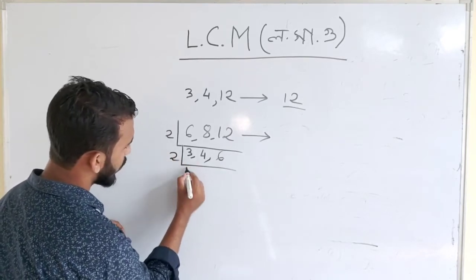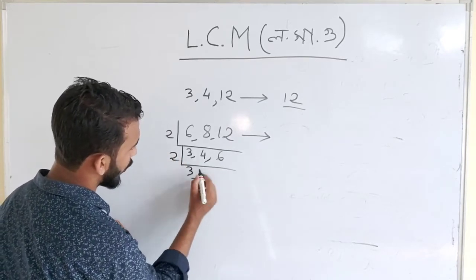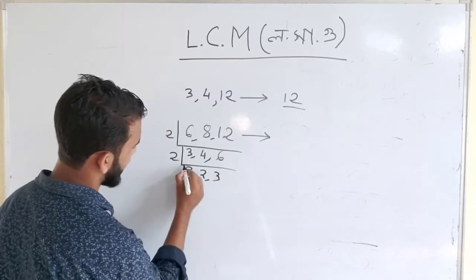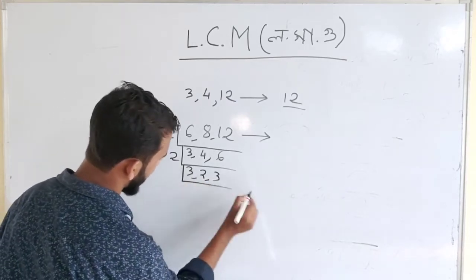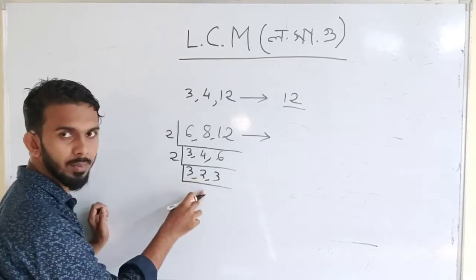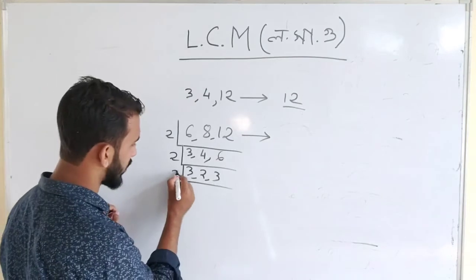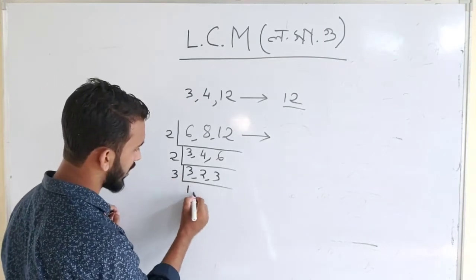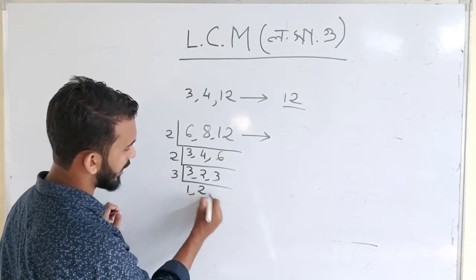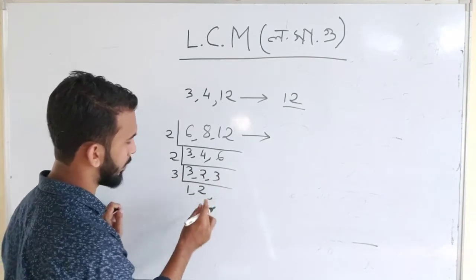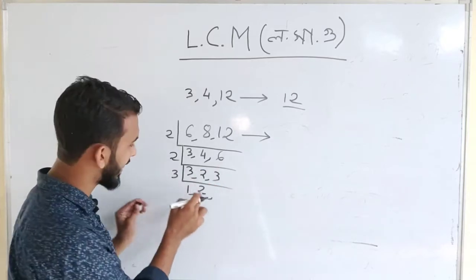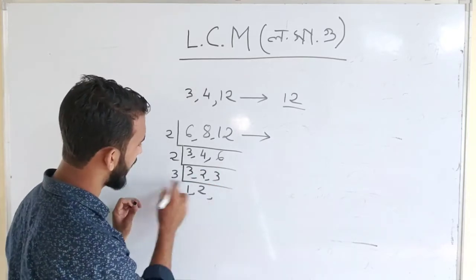Now we have 2, 3, 4 and 2, 3, 6. We have 2, 4; 2, 3, 6. If 2 gives 1 and 2 gives 1, we have 2, 3 and 3 — giving us 2, 3, 1.